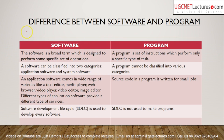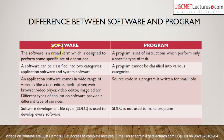Now let's look at the differences between software and program — a question often asked in UGC NET and interviews. Software is a broad term designed to perform a specific set of operations. For example, a multimedia player can play video files, audio files, and MP3 files. MS Office is a software with multiple uses: writing documents, creating databases in MS Access, or using spreadsheets in MS Excel.